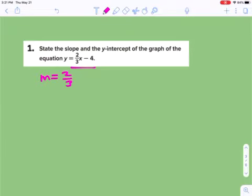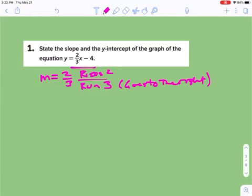So that means that you have a rise of 2, so it rises 2, and then a run of 3, which means it goes to the right 3. That's the way I like to think of it.